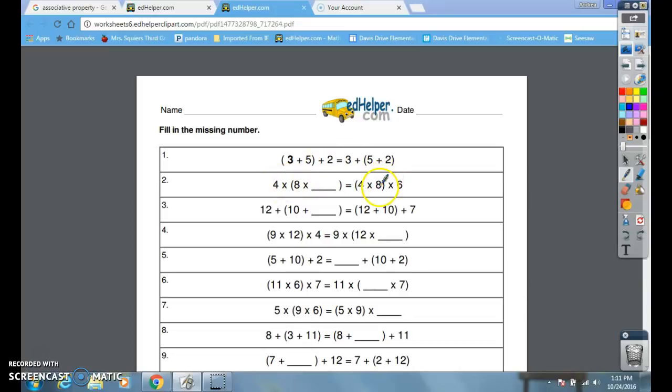They have left the 8 in the parentheses, so there's only one number that it could be. The 4, 8, and 6 are here. Which number is missing? If you said 6 you were absolutely right. So the 6 goes here.